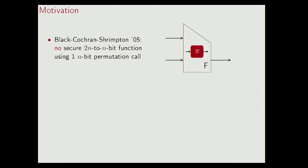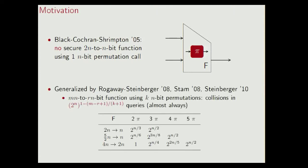In more detail, Black et al. proved that if you want to construct a 2N to 1N bit compression function based on a 1N bit permutation, you can find collisions in at most two queries. This result has been generalized by Roggewin Steinberger, by Stam Steinberger, and what we know by now is that if you want to construct an MN to RN bit compression function using K N-bit permutation calls, you can find collisions in this many number of queries. This bound is usually known as Stam's bound, and it's proven to hold for almost all choices of M, K, and R.